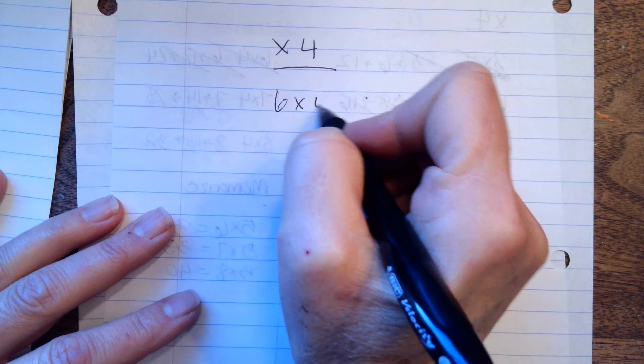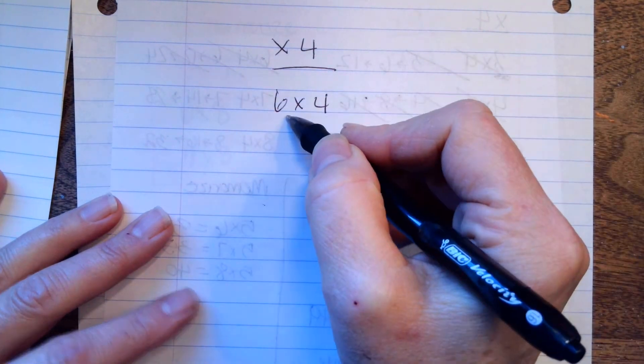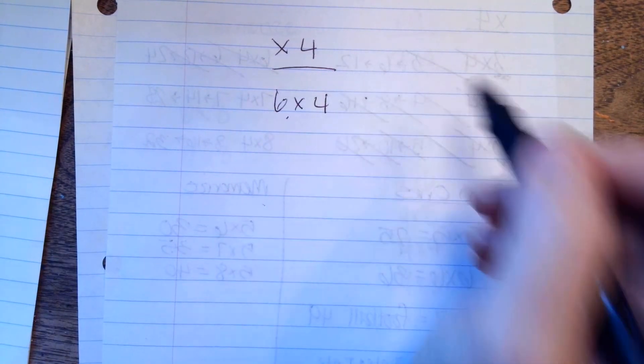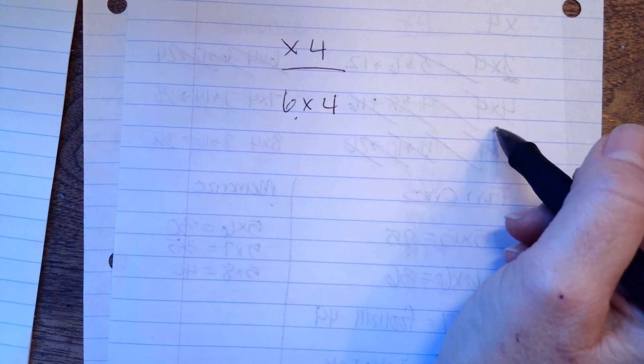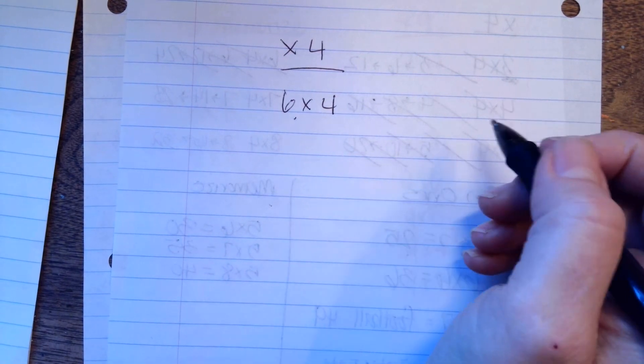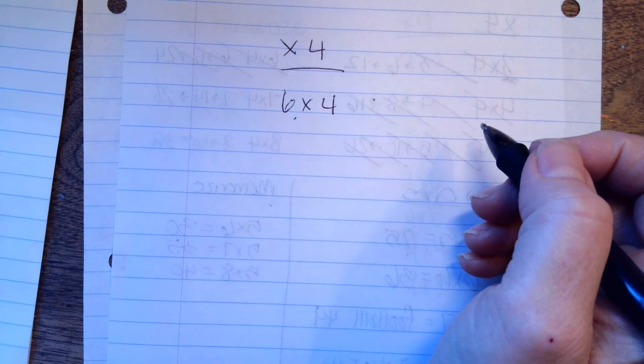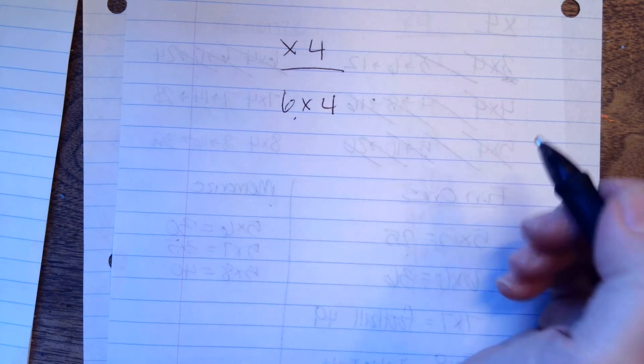So 6 times 4. 6 doubled is 12, and 12 doubled, which just means that number plus itself. So 6 doubled is 12, 6 plus 6 is 12, and then 12 plus 12 is 24.